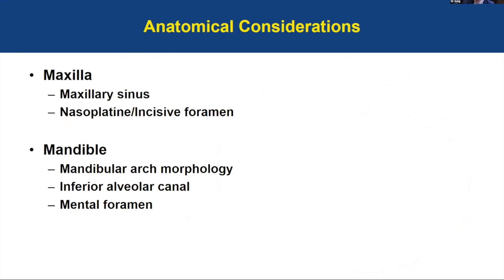Now that we have refreshed a few basic concepts of implant placement, we will review the anatomic structures related to dental implants. Planning and reviewing anatomy before surgical procedures can help avoid problems. CBCT should be considered as an important diagnostic aid in predetermining unexpected findings not visible in clinical assessment or conventional radiographs. In the maxilla today, we will review the maxillary sinus and the nasopalatine incisive foramen. In the mandible, we will review the mandibular arch morphology, the inferior alveolar canal, and the mental foramen.